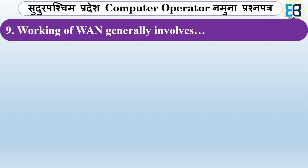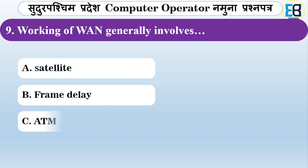The working of a WAN generally involves what? A wide area network commonly involves satellite — it uses satellite communication as a key component.